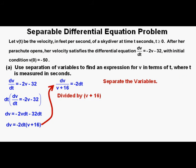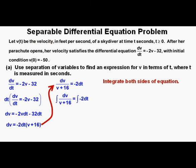Now, with the variables separated, we will be integrating both sides of the equation. Here are the integrals set up on both sides: the integral of dv over (v plus 16) equals the integral of negative 2 dt. After integrating, we get the natural logarithm of the absolute value of the quantity v plus 16 equals negative 2t plus our constant of integration, c.